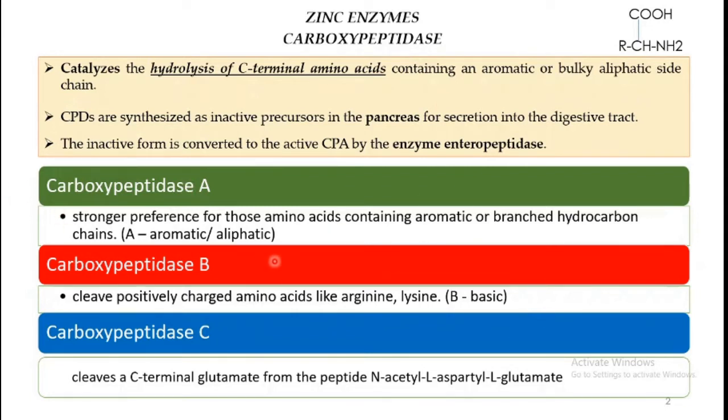If the amino acid is basic in nature, meaning positively charged amino acids like arginine and lysine, then it is cleaved using carboxypeptidase B. Carboxypeptidase C is also called yeast carboxypeptidase. This one is specifically used to cleave a peptide called N-acetyl L-aspartyl L-glutamate.